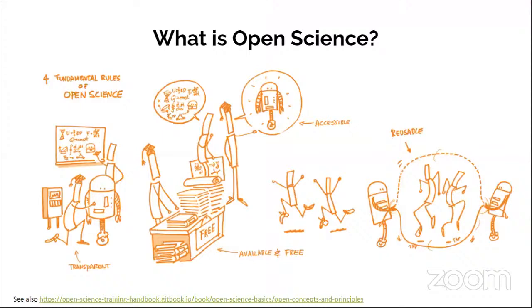So what is open science, actually? I really like this image here because it shows different perspectives of what open science means. Open science is transparent science — science that you can look into, that you can actually understand what people are doing. That goes beyond just reading the paper; it goes more into things like reading the code, looking at the data, looking at lab reports or whatever field you're in.